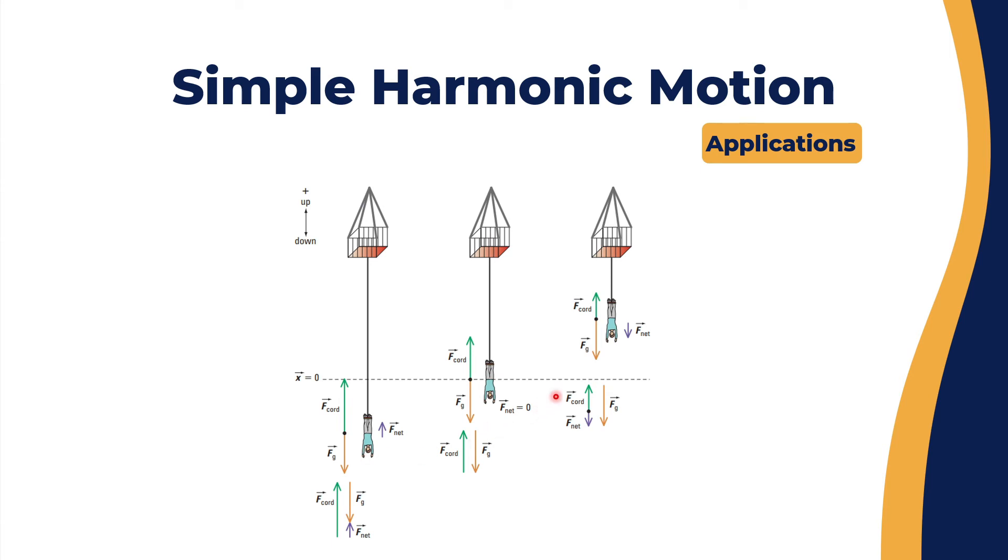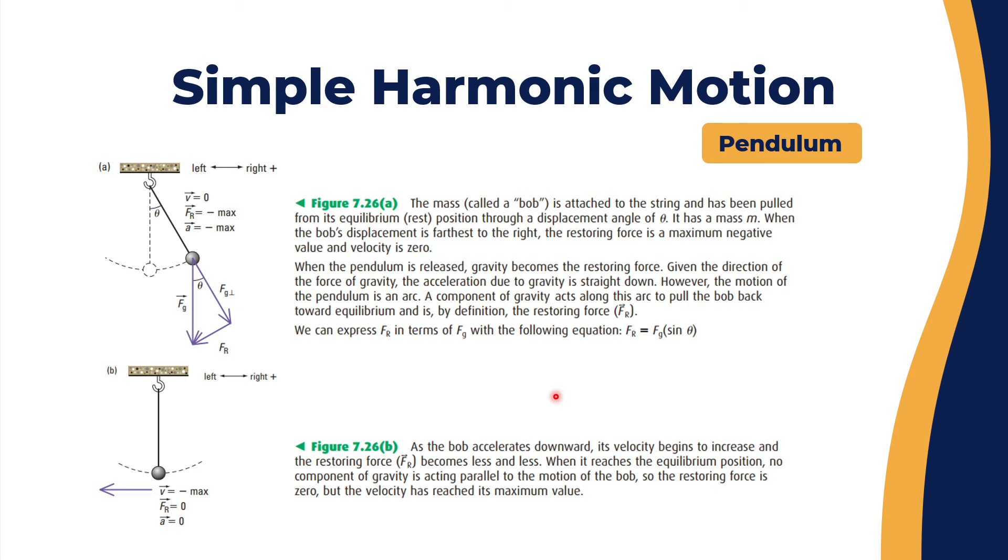Let's take a pendulum that's swinging right and left. The mass of the pendulum is attached to the spring and has been pulled from its equilibrium position through a displacement angle of theta with mass m. At the displacement farthest to the right, the restoring force is at maximum negative value and velocity is zero.